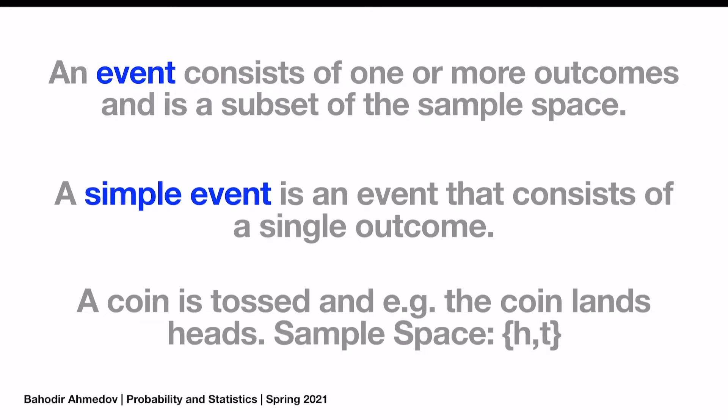An event is a definition. The event is a set which consists of some items from the sample space. An event is going to be just a subset of the sample space. We define the subsets now — some event is going to be the items we choose from the sample space. A simple event is an event that consists of a single outcome. For example, you can create a sample space of rolling a die — the numbers from 1 to 6 — and then create events.